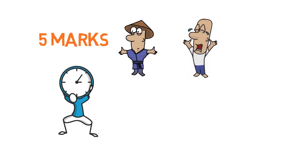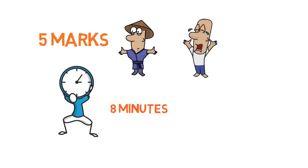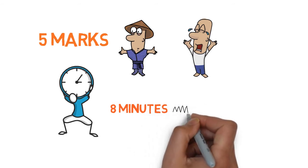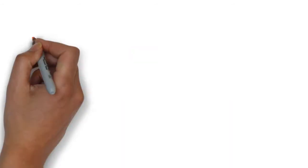So, for 5 markers, the maximum time allotment is 8 minutes per answer. The time taken for all the 5 markers should be no more than 80 minutes.